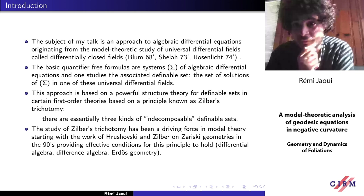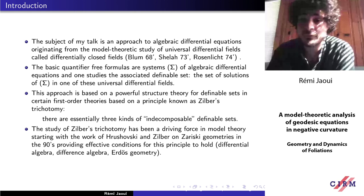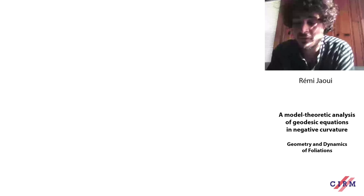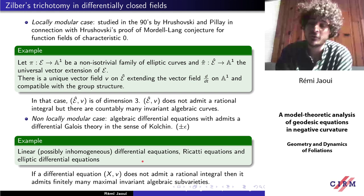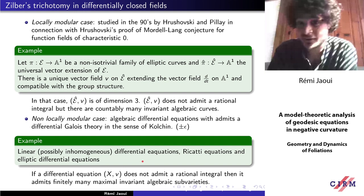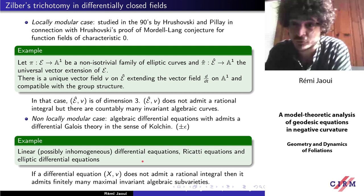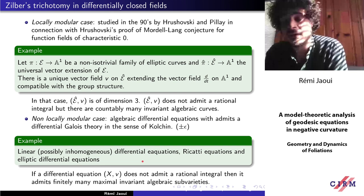I'm going to start by describing what the three classes of differential equations look like. The first one is the locally modular case. This is the one that made the model theory of differential fields famous because of the proof by Hrushovski of the Mordell conjecture for function fields of characteristic zero, and the first class of equations is related to differential equations that appear in this proof.